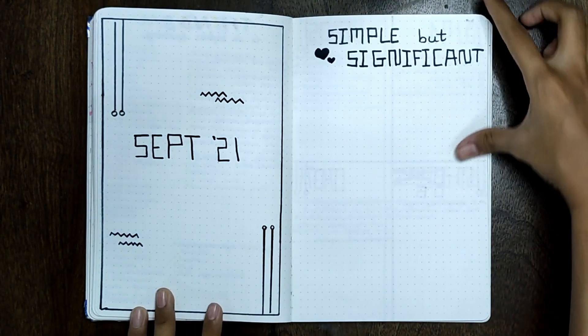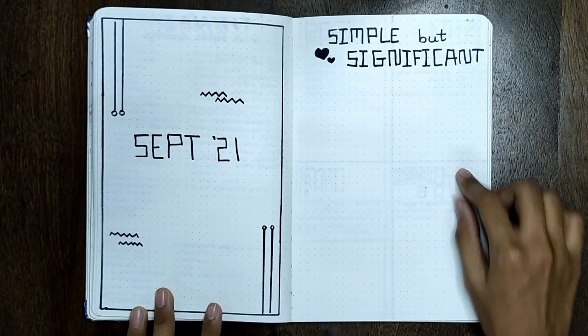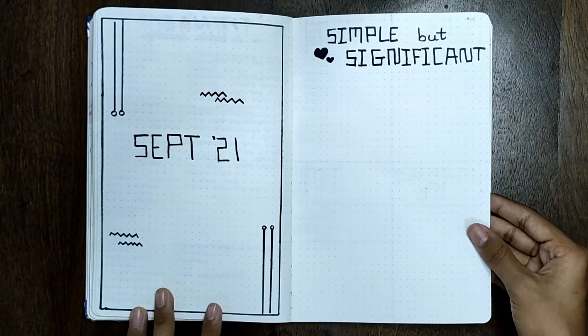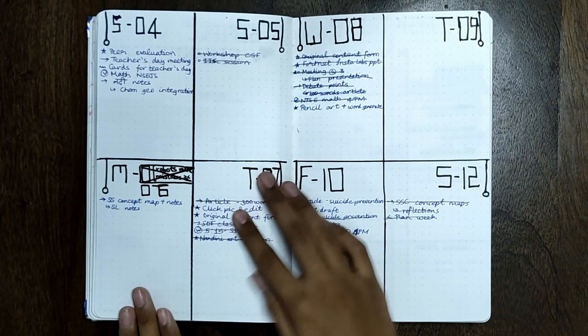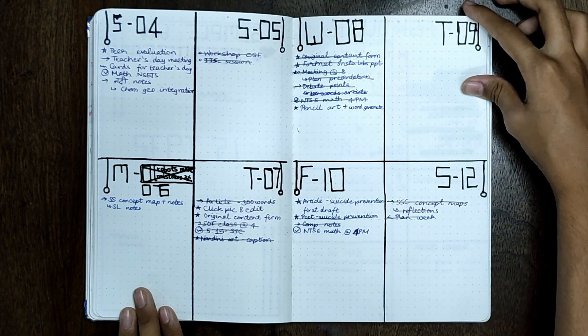Before that, let me show you my September bullet journal. The theme I had chosen was basically black and white, something really simple. Here on the right of the cover page, I have a place to record memories and highlights which I'll be filling up at the end of the month.